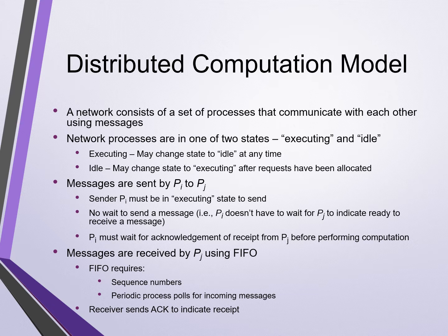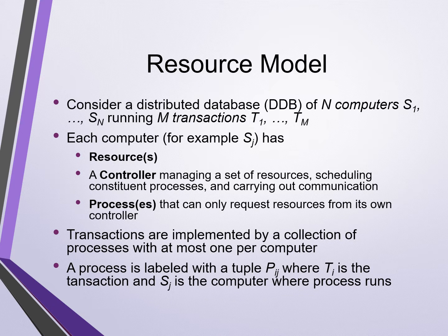Chandi, Misra, and Haas study a distributed database of N computers, S1 to SN, running M transactions, T1 to TM. Each computer has resources, a controller managing a set of resources, scheduling constituent processes, and carrying out communication. Processes can only request resources from their own controller. Transactions are implemented by a collection of processes with at most one per computer. A process gets labeled with a tuple P sub IJ, where TI is a transaction and SJ is a computer where the process runs.